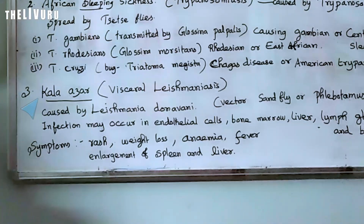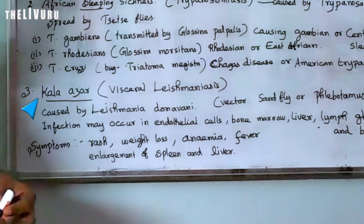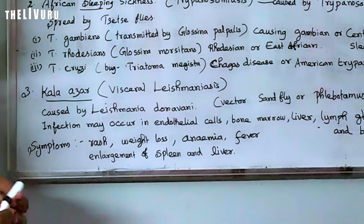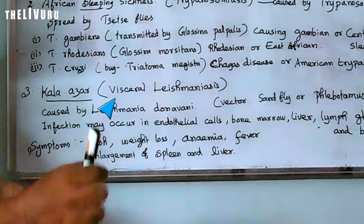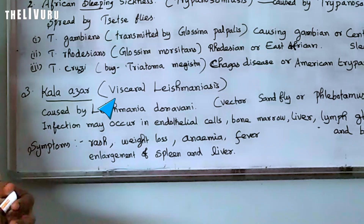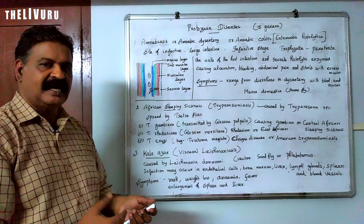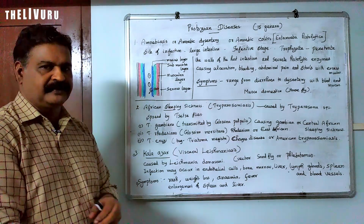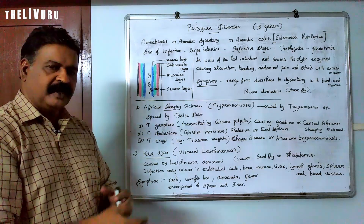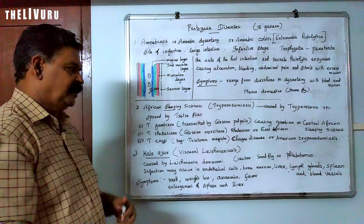The third disease is kala-azar, caused by Leishmania donovani. It is a visceral form of leishmaniasis, affecting internal organs of the body.